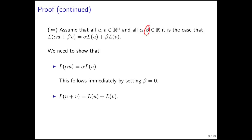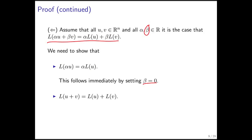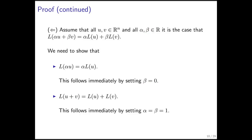We're assuming that for all u, v, alpha, and beta this result is true, so we can pick a specific beta. If we pick beta to be 0, then those terms drop away and we're left with exactly the scaling result we want. Similarly, to prove that adding first and then transforming is equivalent to transforming first and then adding, all we need to do is choose alpha and beta both equal to 1, and we get exactly the result that we want.